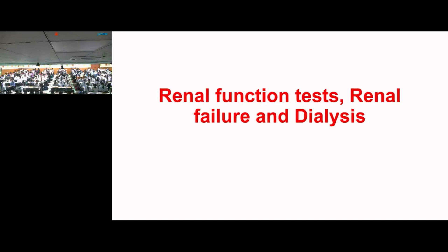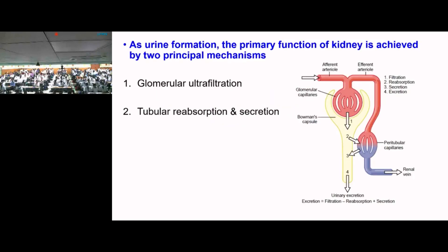Does it test only the glomerular functions or anything else? Tubular functions too. So filtration is a function of the glomerulus, and tubular secretion and reabsorption are the functions of the tubules. That is the reason we do renal function tests. Urine formation, the primary function of the kidney, is achieved by two principal mechanisms: glomerular ultrafiltration, and tubular reabsorption and secretion.